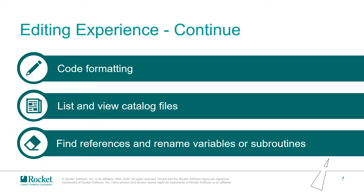Another feature is to list and view the catalogued Basic files. As you know, the catalogued files may not belong to the current account, but sometimes Basic program files include them. If so, it's difficult to locate a catalogued file. We hope to list all catalogued files through this feature so that developers could view the content very easily. And through the go-to-definition and peek definition feature, users could locate to the correct catalogued files. This provides much convenience to read and debug the Basic code.